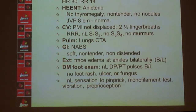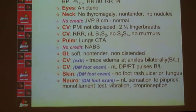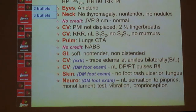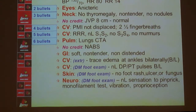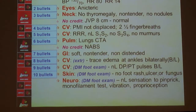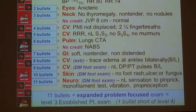Note that JVD is not one of the accepted bullets in the 1997 exam, and listening to the abdomen is not a 1997 bullet either. The diabetic foot exam is actually multiple bullets — pulses, skin, and a neuro exam. Based on this example I have 11 acceptable bullets, which is one short of the Level 4 threshold under 1997 guidelines — so this is a Level 3 under 1997.